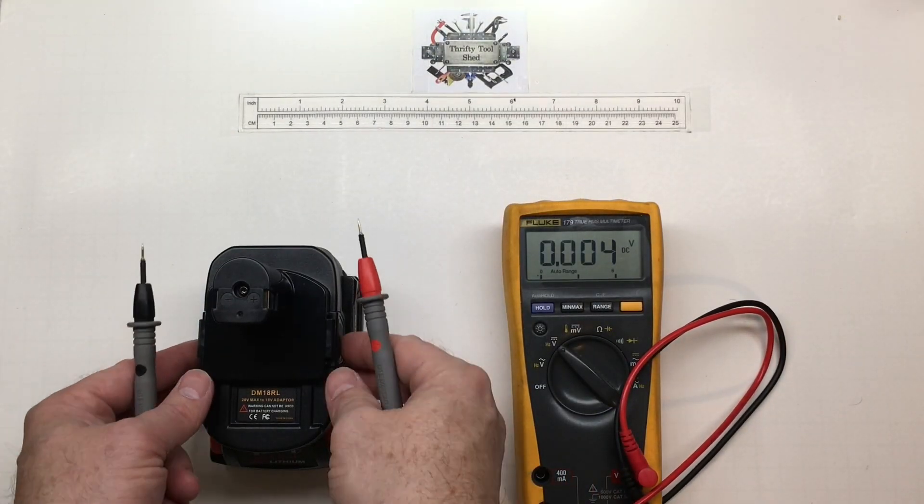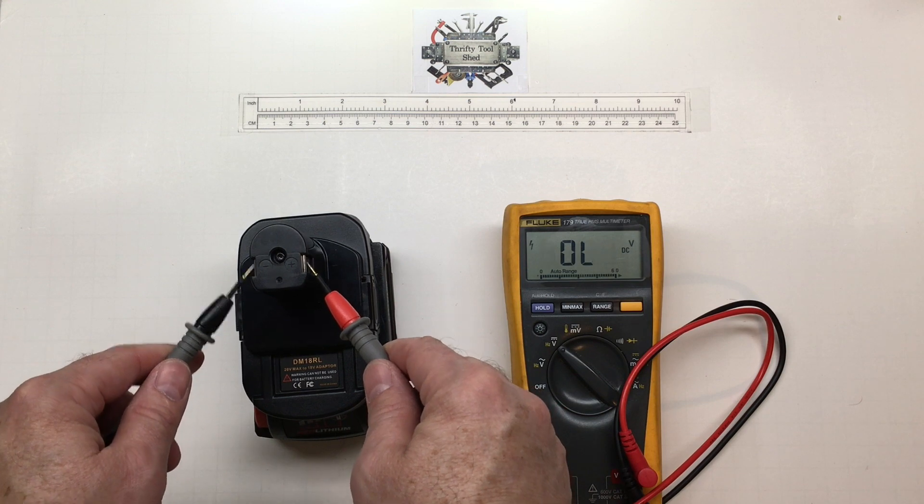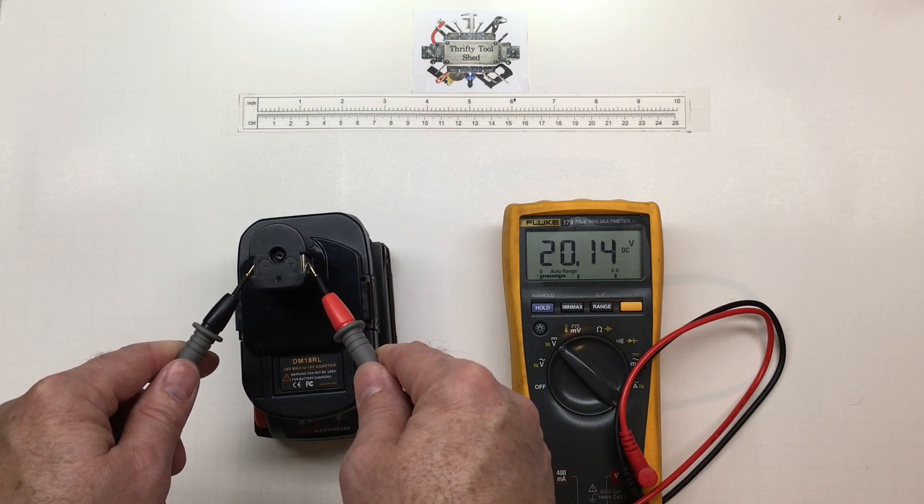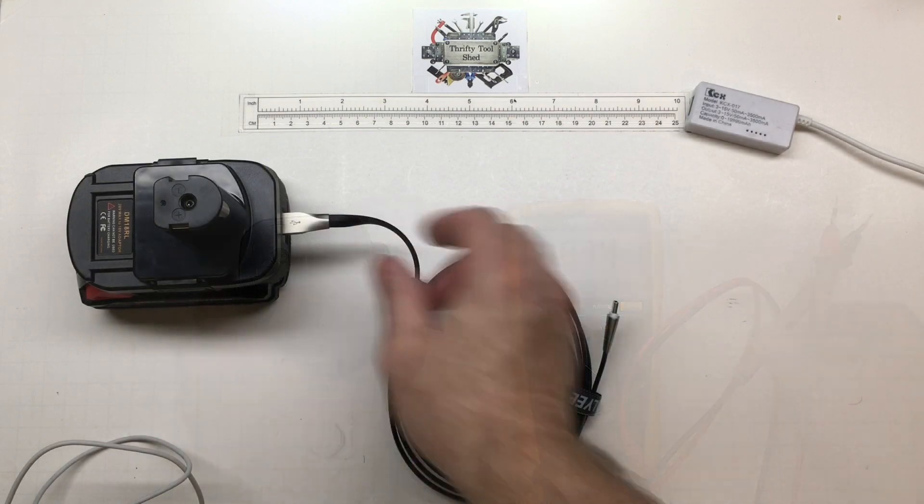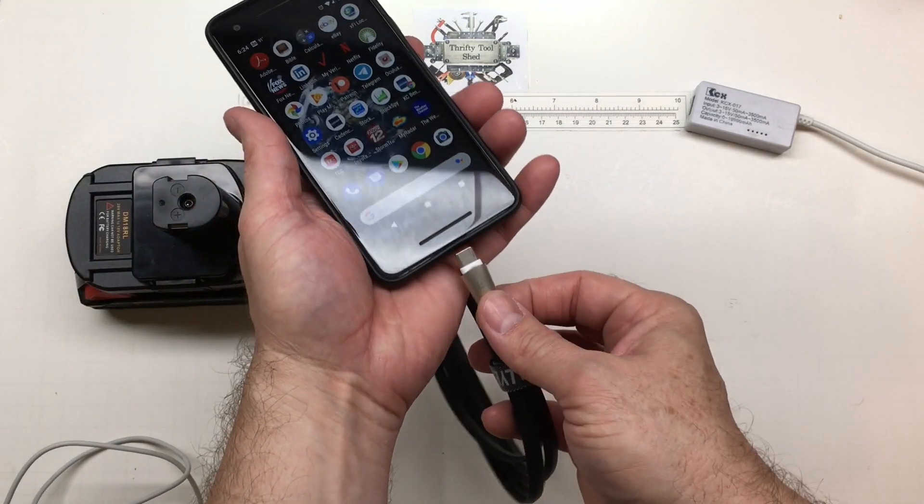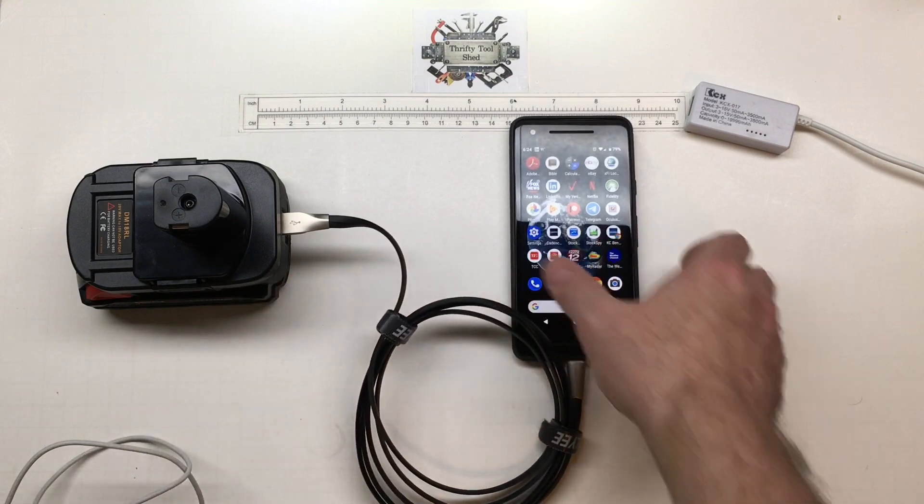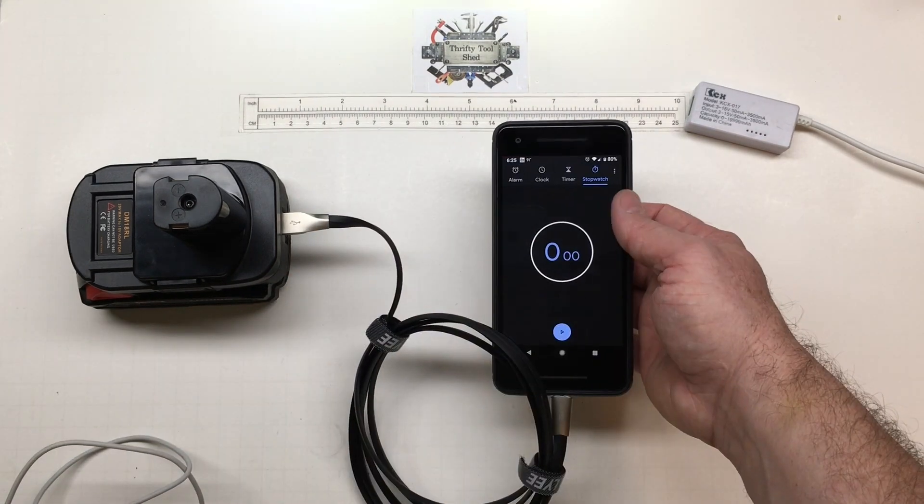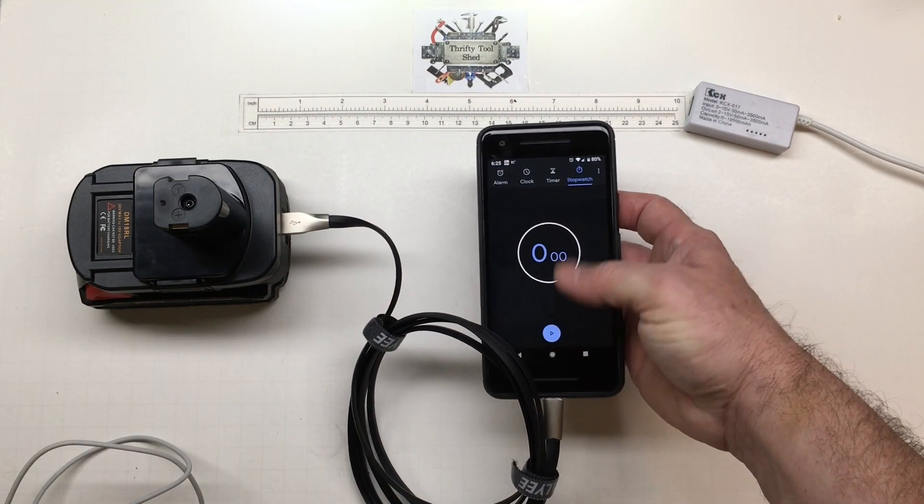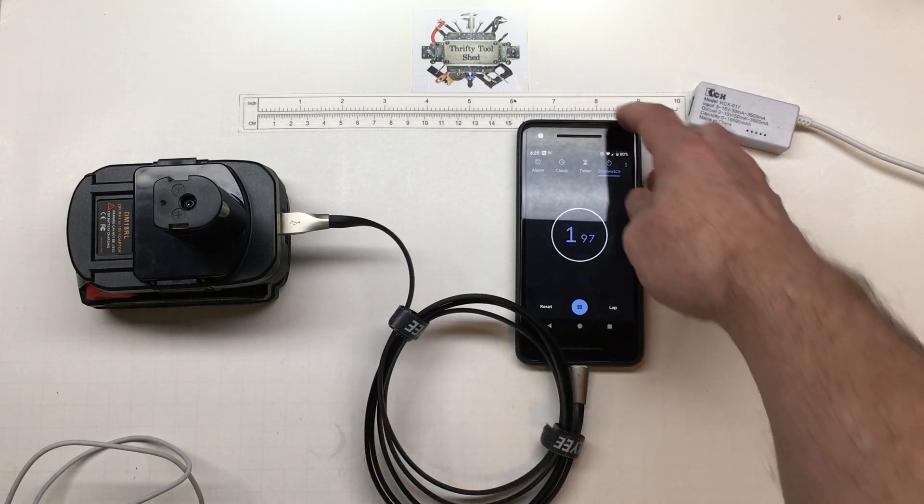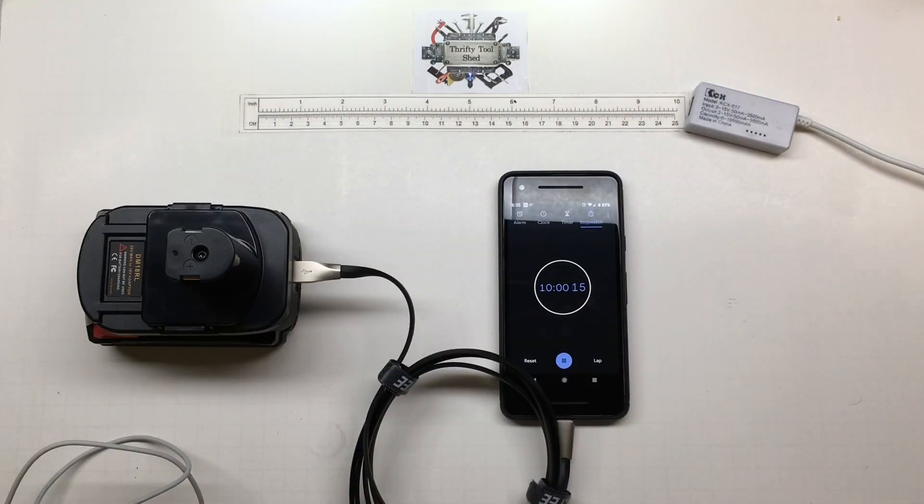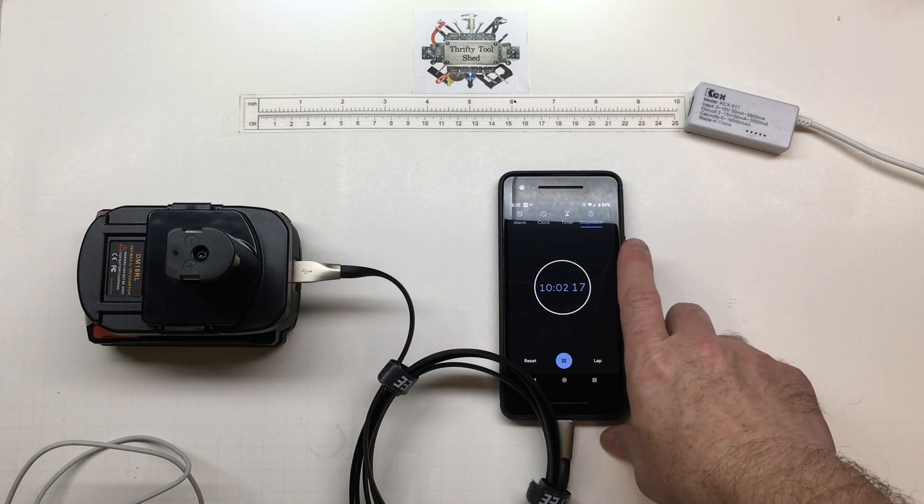First check before putting in a tool, just want to read across the terminals. We're getting our 20 volts. I have a USB-C cable here from my Google Pixel. It does show charging 79%. I'm just going to leave it 10 minutes and I'll come back and see what the levels come up to.